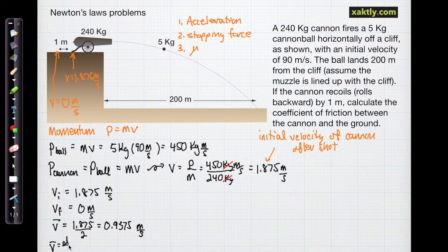And what we're going to use that for is to find the time that it takes the cannon to stop. So the time is distance over average velocity. It takes 1 meter for the cannon to stop, and 0.9375 meters per second. So the time in seconds is 1.067 seconds.